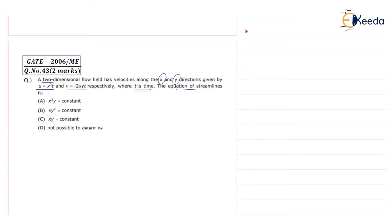First of all, we write down the given data here. Velocity in the x direction, u, is equal to x squared t, and v is equal to minus 2xy t, where t is time.